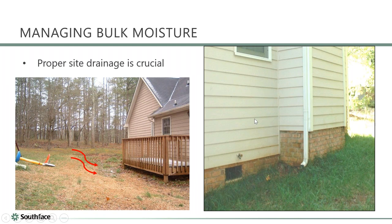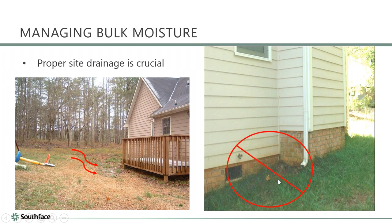A common issue: they ran the downspout, captured roof water in the gutter, ran it down — and then dumped it right into the foundation. The grade slopes into the house and the foundation drain dumps toward the house too. The brick was visibly turning green. Directing water toward the foundation is a guaranteed problem.